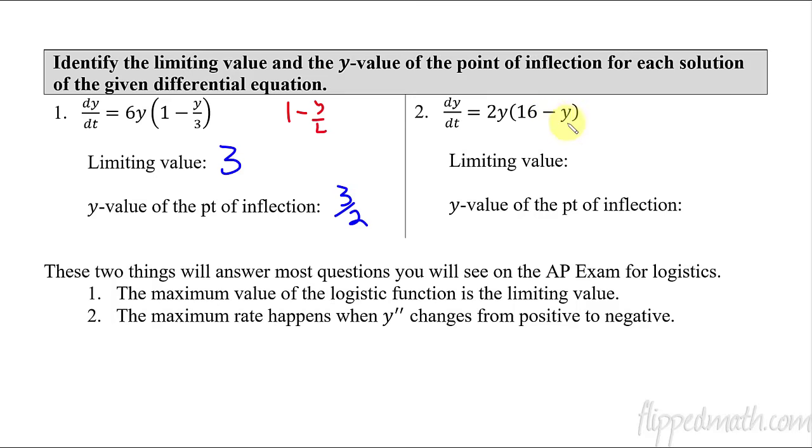Pretty simple, that's not bad at all. So now on this one, we have to recognize that there's two y's here, but now it is of the form where you have in the parentheses L minus y. So it's a little bit different in this case with the ky in front of here. So now what are we doing? The limiting value is the L, which is 16, and then the y value of the point of inflection is halfway up to 16, which is just 8. So pretty easy stuff on this first part.